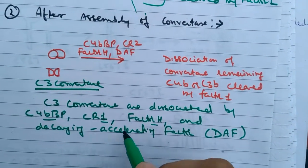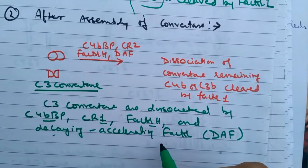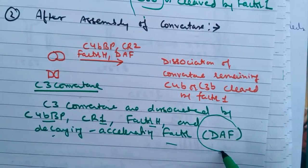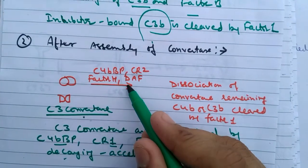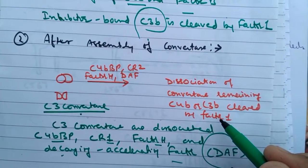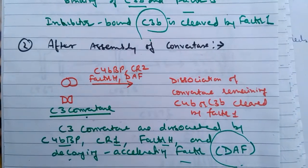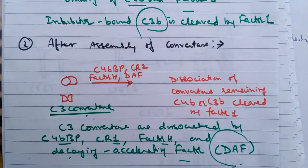C3 convertase is dissociated by C4BBP, CR1, factor H, and decay-accelerating factor, that is DAF. So this is C3 convertase. All these proteins dissociate its components, making it unable to perform the action.